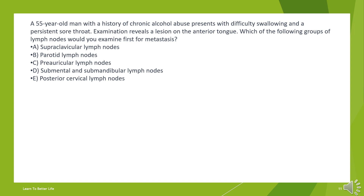A 55-year-old man with a history of chronic alcohol abuse presents with difficulty swallowing and a persistent sore throat. Examination reveals a lesion on the anterior tongue. Which of the following groups of lymph nodes would you examine first for metastasis?